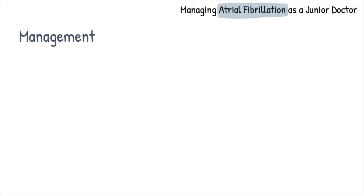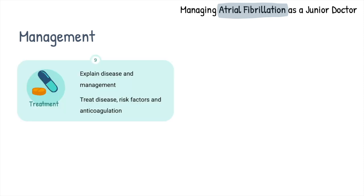Once the management steps have been planned, it is vital to explain it all to the patient. Always remember, management of AF involves three areas: treating AF — which means rate versus rhythm control strategy — anticoagulation based upon the CHA2DS2-VASc score and HAS-BLED score, and management of associated conditions such as hypertension and diabetes.